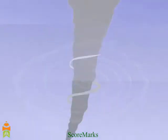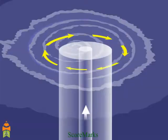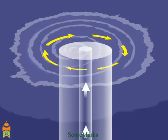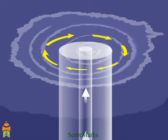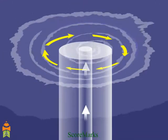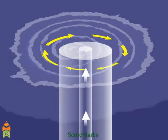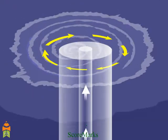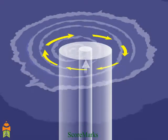Cyclones are formed when warm humid air rises from the ocean into the upper cooler region of the atmosphere. As the air gets heated, it spirals up towards the eye of the hurricane due to the spinning of the earth.